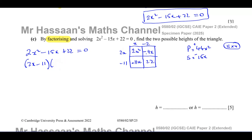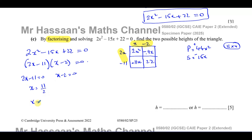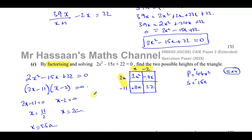This gives us the factorized form: (2x minus 11)(x minus 2) equals 0. So either 2x minus 11 equals 0, giving x equals 11/2 which is 5.5 cm, or x minus 2 equals 0, giving x equals 2 cm.